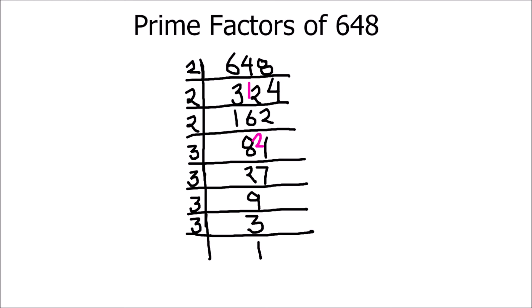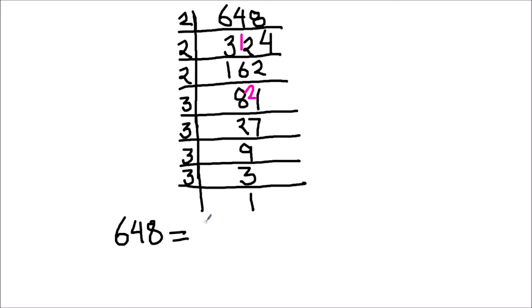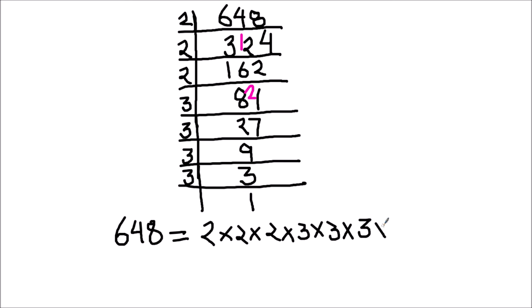Now we have all the factors of 648. We can write 648 as 2 times 2 times 2 times 3 times 3 times 3 times 3. These are all the prime factors of 648.